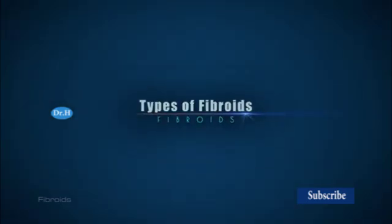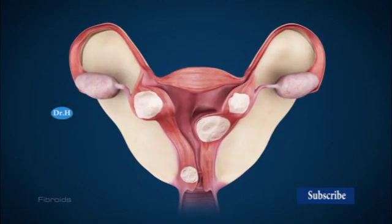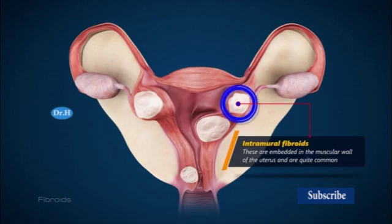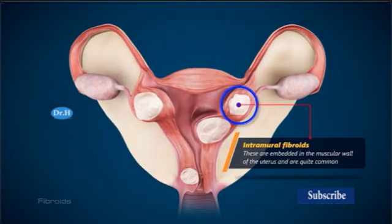Types of fibroids. Fibroids are classified based on their location in the uterus. The different types of fibroids include intramural fibroids, which are embedded in the muscular wall of the uterus and are quite common.